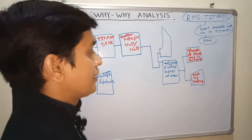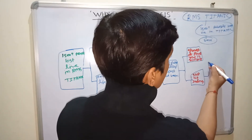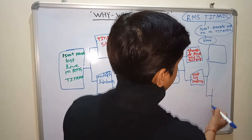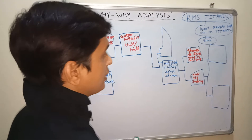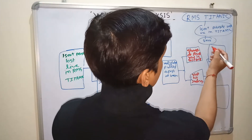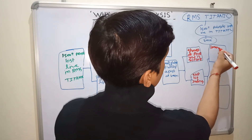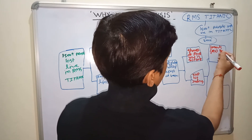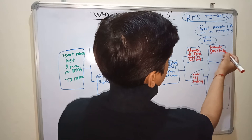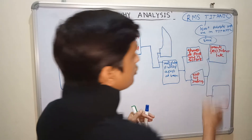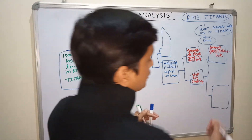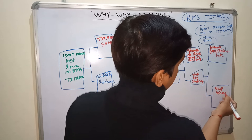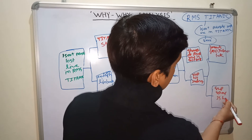Again I am asking — why did the ship hit the iceberg? I get two answers. First answer: the lookout saw the iceberg late. And second answer: the ship's speed was high.